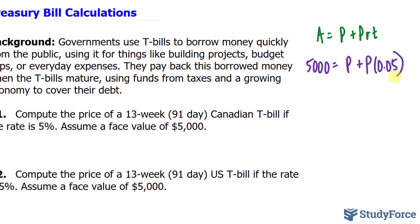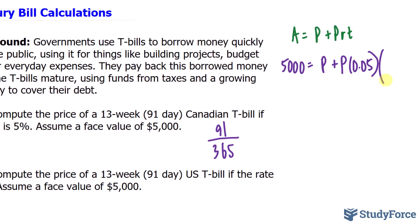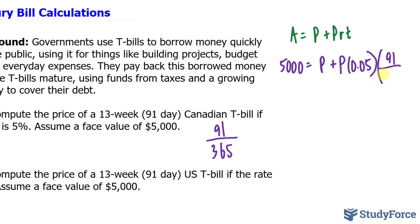Because this T-bill will mature in 91 days, when calculating in the Canadian market, we take a year to be 365 days. Since 91 days constitutes a portion of that, we write in for T the fraction 91 over 365.